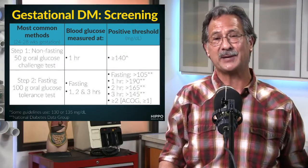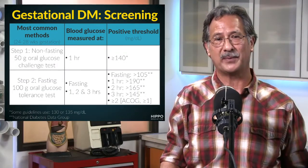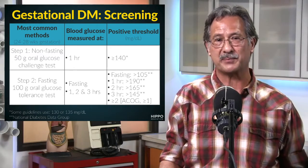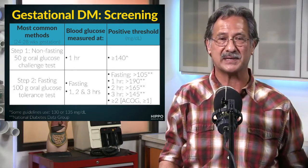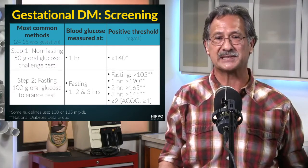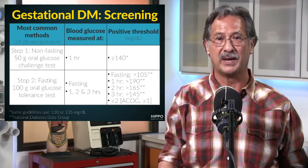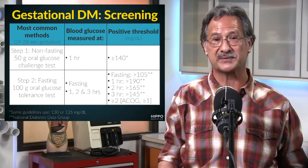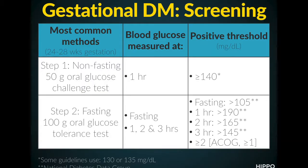Let's look at this slide. In the US, since 90% of pregnant women have at least one risk factor for glucose impairment during pregnancy, universal screening or testing is typically performed between 24 to 28 weeks of gestation.